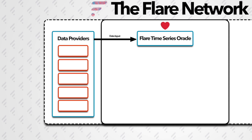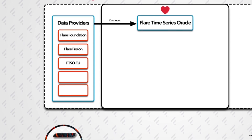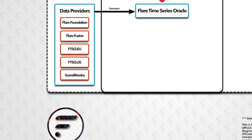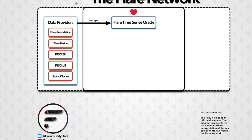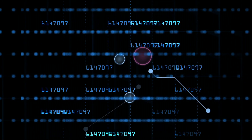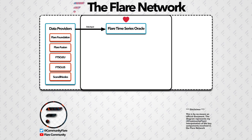Here are some examples of data providers we know in the community already: Flare Foundation, Flare Fusion, FTSO EU, FTSO US, and Scandi Nodes. Data providers have written custom logic to aggregate price information from a number of different sources, for example exchanges. They are basically trying to calculate the most accurate price for a particular asset. The Flare Time Series Oracle will then receive regular data from all the data providers and process it in a manner which produces an average price for a given asset.